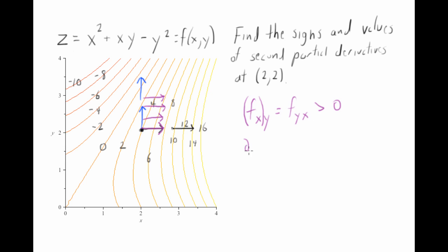Let's check. Let's take del del x of x squared plus xy minus y squared. And we will get 2x plus y. And then let's take del del y of del z del x. And we get 2. And that's positive. Oh, I don't get 2. Stop. Wait.